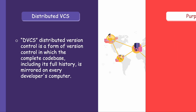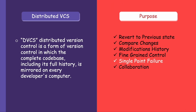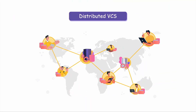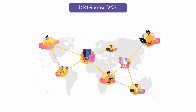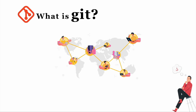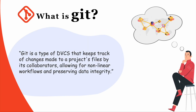With DVCS, there is no risk of losing all project history due to a single failure, and it allows multiple people to work on the project simultaneously. Let us summarize everything we have learned in this video and answer our question: What is Git? Git is a type of DVCS that keeps track of changes made to a project's files by its collaborators, allowing for non-linear workflows and preserving data integrity.